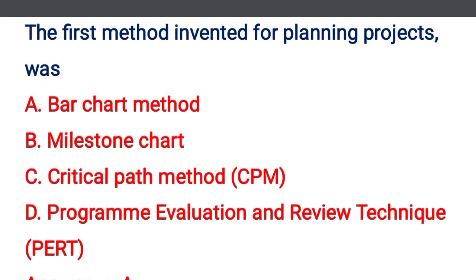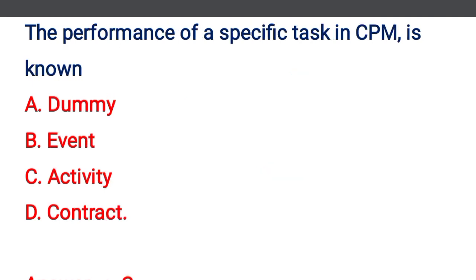Next question: the first method invented for planning a project was — option A: bar chart method, option B: milestone chart method, option C: critical path method, option D: program evaluation review technique. The correct answer is option A: bar chart method. Next question: the performance of a specific task in CPM is known as — option A: event, option B: dummy, option C: activity, option D: contract. The correct answer is option C: activity.